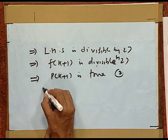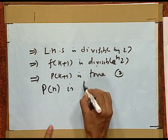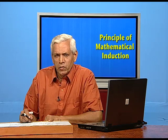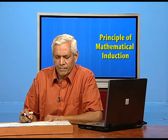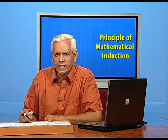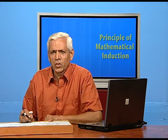Hence, by mathematical induction, P(n) is true for all n belonging to the natural numbers. So we have given two examples on divisibility using mathematical induction. Having done this, we would like to emphasize one point: why this kind of approach gives a guarantee that the result is true for all values of n. Actually, the name 'mathematical induction' is misleading — it is not an inductive process; it is actually a deductive process.